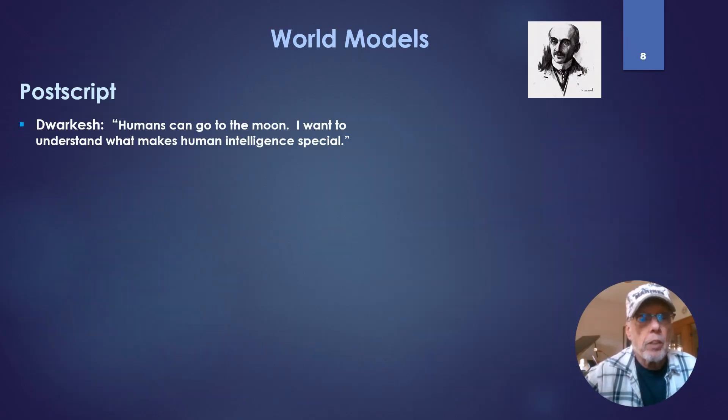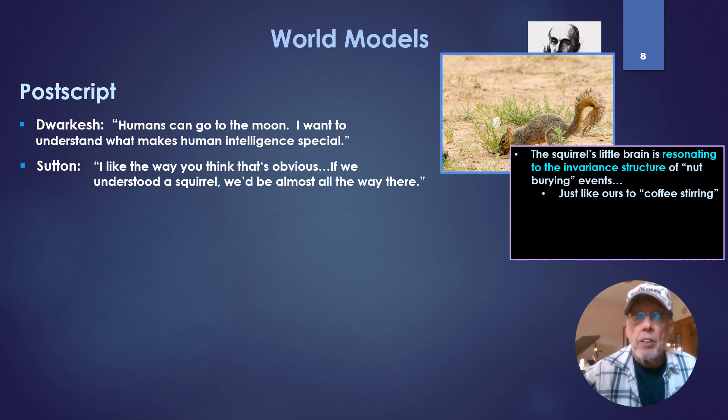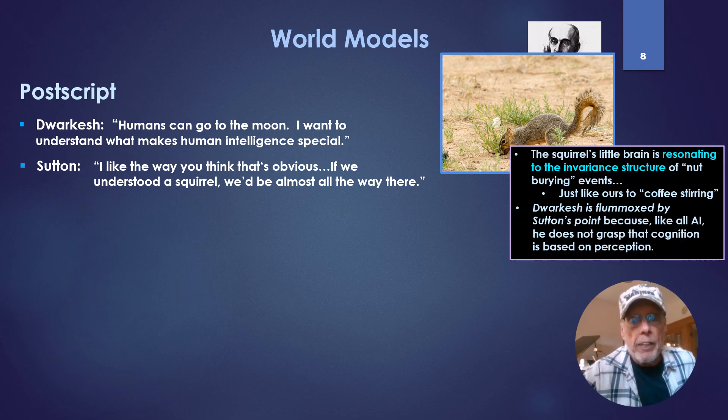Just a quick postscript. Dwarkesh, in the course of the discussion, says, Humans can go to the moon. I want to understand what makes human intelligence special. Sutton says, I like the way you think that's obvious. If we understand a squirrel, we'd be almost all the way there. Now, Dwarkesh says quite a different thing called time graspingness. But to me, the squirrel's little brain is resonating to the invariant structure of nut-bearing events, all kinds of other events, tree climbing, etc., just like ours, to coffee stirring. Dwarkesh is flummoxed by Sutton's point because, like all AI, he does not grasp that cognition is based on perception. You have to have a model of perception. Ultimately, how we have the image of the external world, the coffee cup out there, the nut out there.